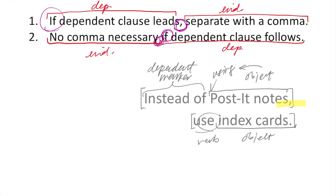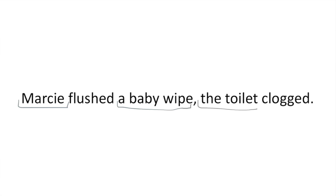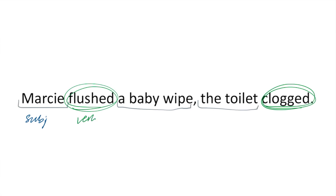Let's try a second sentence to round out our guidelines. Here it is: Marcy flushed a baby wipe. The toilet clogged. This is a rather straightforward segment. We have some nouns — Marcy, a baby wipe, and the toilet — and we have a verb, which is flushed, and then a second verb, which is clogged. So maybe we have two clauses going on. Let's diagnose this as we go along.